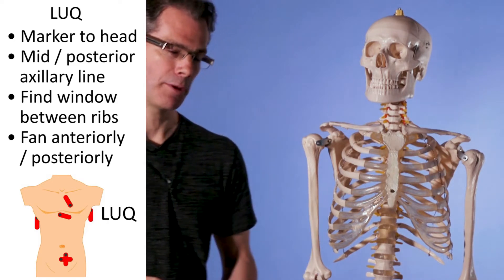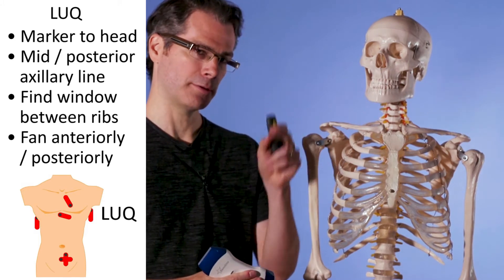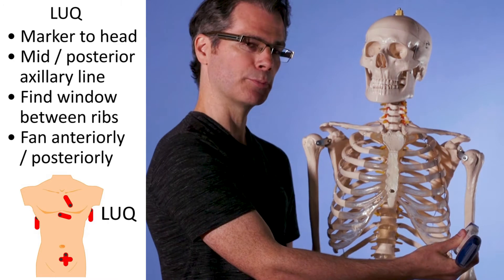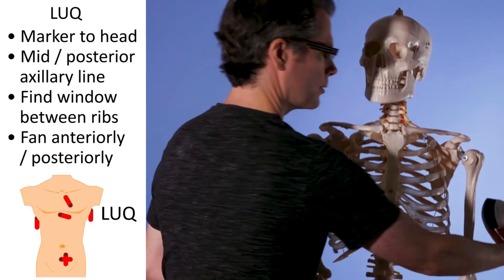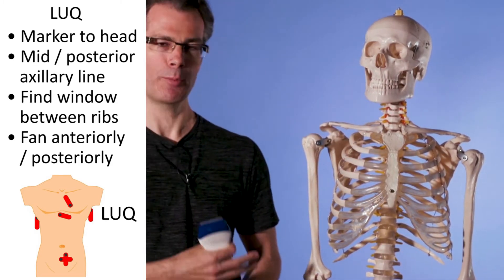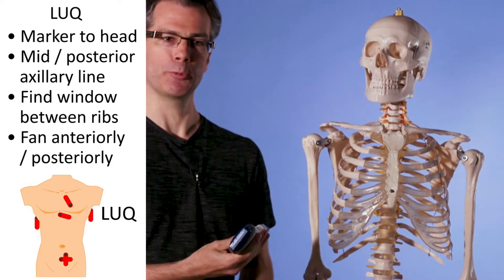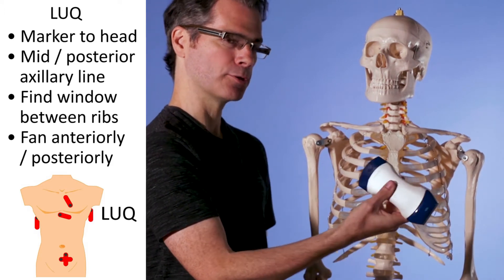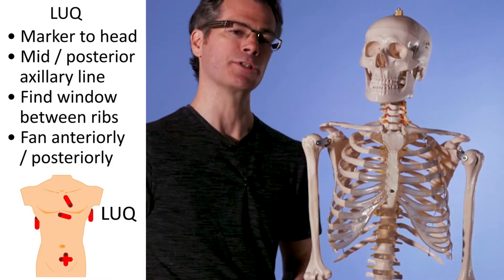Now we move on to the left upper quadrant. Again, have the probe marker towards the patient's head, but this time position a little bit more posterior and superior — so the probe is a little higher up and a little further back. Again, find a window between the ribs, rotating so you're a bit more parallel to the ribs. Once you've found your window, fan anteriorly and posteriorly, shining the beam all the way through the whole region.